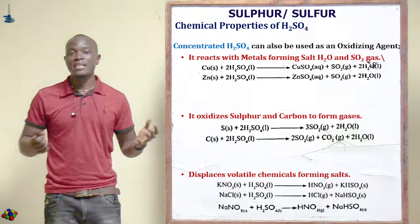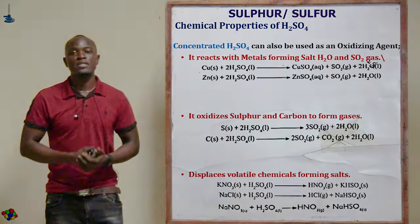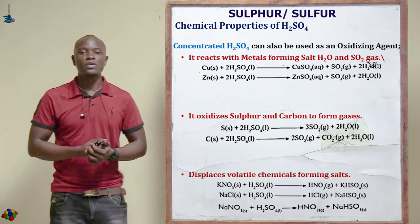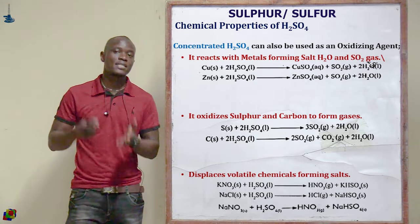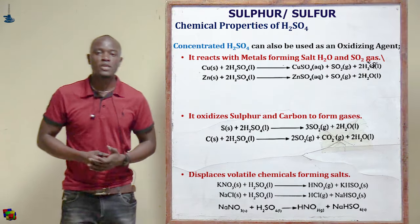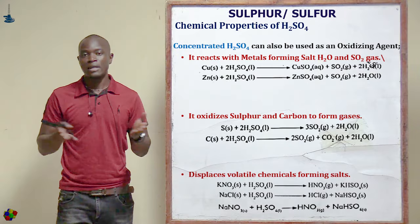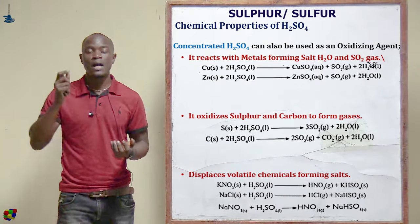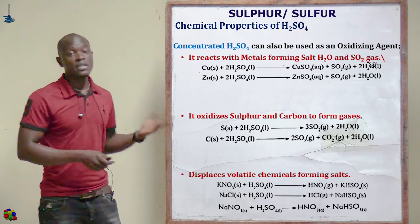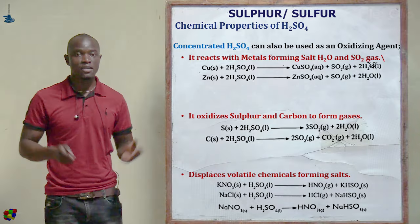Concentrated sulfuric acid also displaces more volatile acids from their salts. For example, reacting with potassium nitrate (KNO₃) gives nitric acid and potassium hydrogen sulfate; reacting with sodium chloride (NaCl) gives hydrochloric acid and sodium hydrogen sulfate; and reacting with sodium nitrate (NaNO₃) gives nitric acid plus sodium hydrogen sulfate.